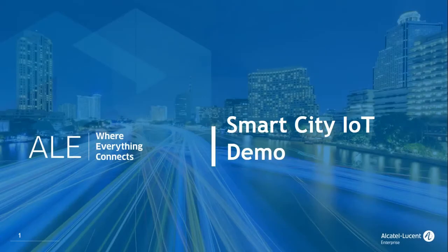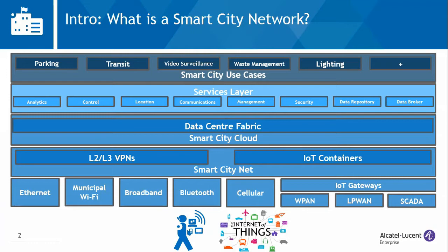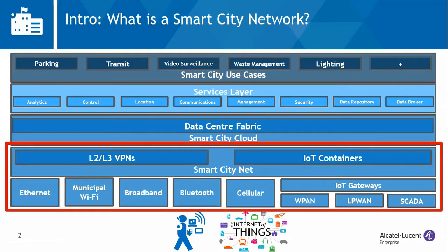Hello and welcome to the Smart City IoT demo. Let's start by defining and introducing the Smart City Network, or CityNet. What we are looking at here is ALE's reference architecture for Smart Cities. The Smart City Network provides network services to government agencies, businesses, residents and visitors. The CityNet plays a pivotal role in implementing Smart City use cases such as smart lighting and video surveillance. The CityNet is the spinal cord that connects IoT devices such as sensors with cloud-based applications that control them and analyze their data.